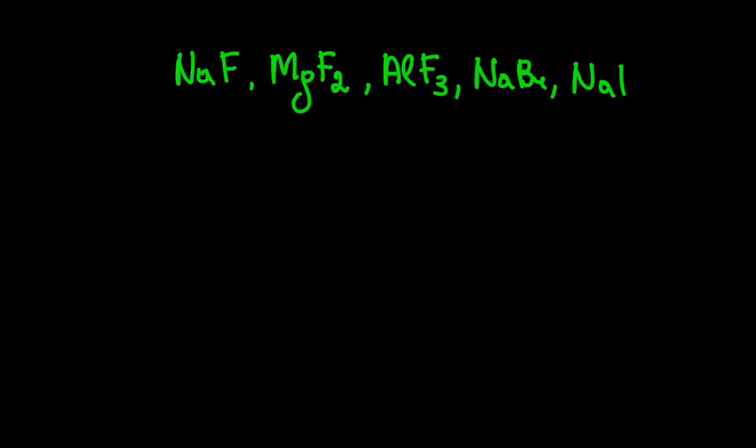Let's look at a few examples and adapt these rules. We have 5 compounds and let's arrange them from the weakest ionic bond to the strongest.